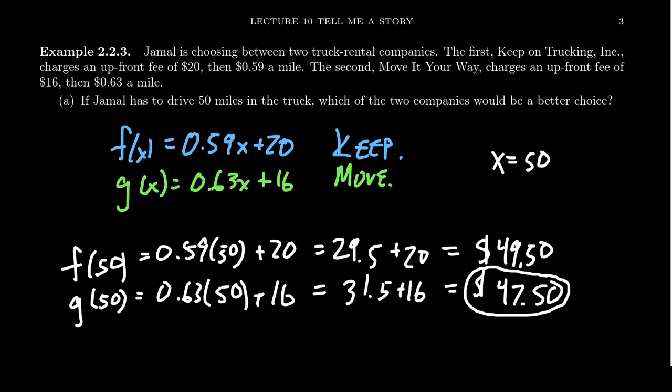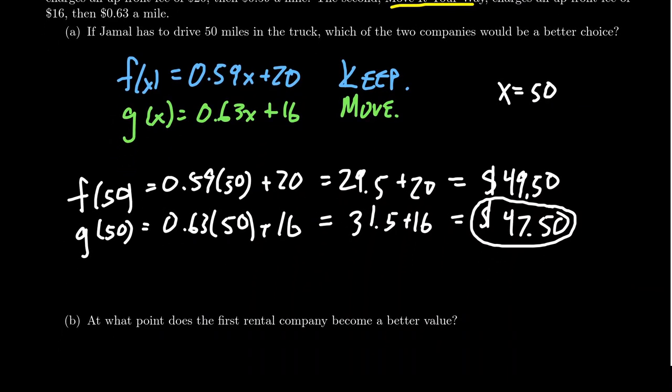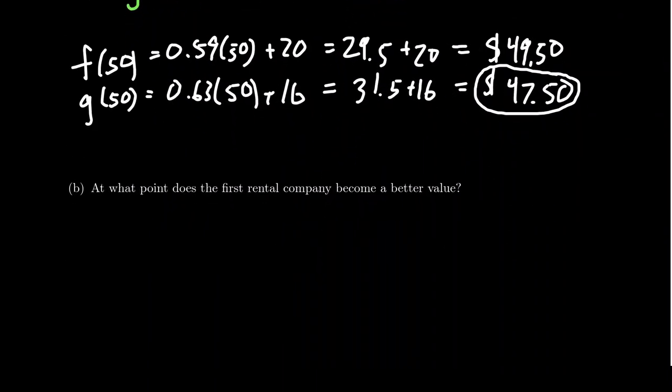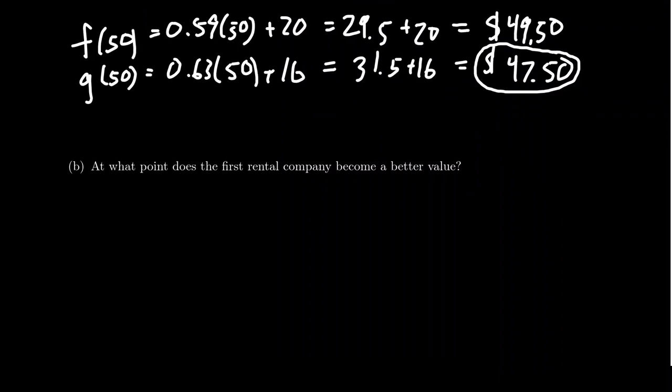And so it would seem like that's the better choice for him. He should be using the second company. It's pretty tight though. $2 is not a huge differential, but that does seem to be the winner in this situation. All things created equal, I would choose the cheaper option there, which would be Move It Your Way, but we can see it's pretty close.